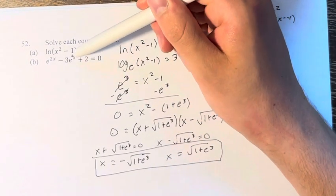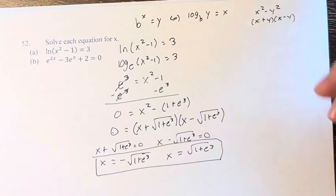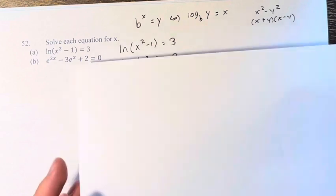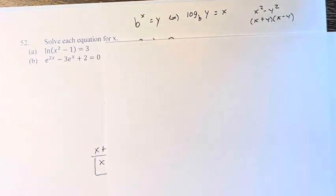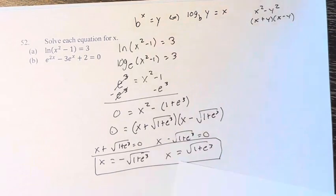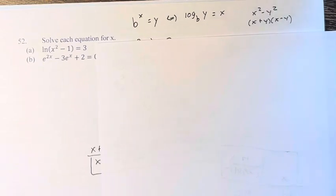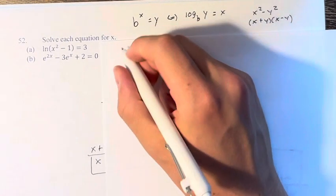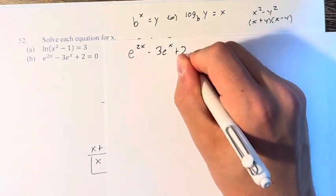And here, in b, we actually have a little bit of a different type of problem. So it's going to require an extra step. The way that we're going to solve this, e to the 2x minus 3 e to the x plus 2 equals 0.